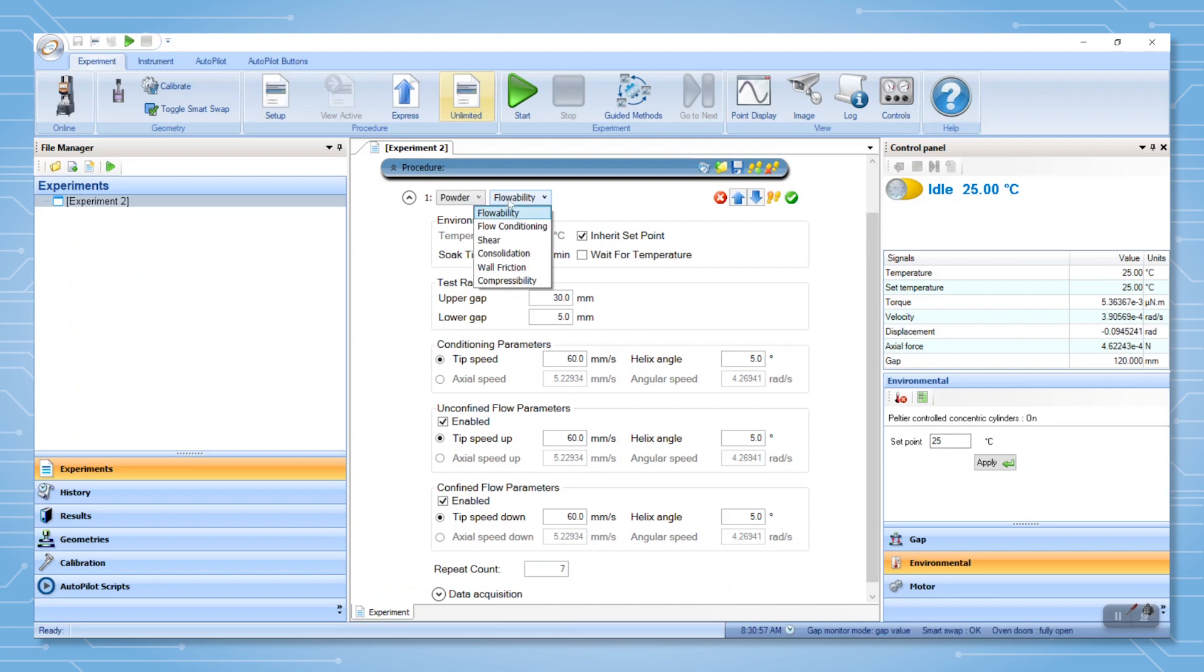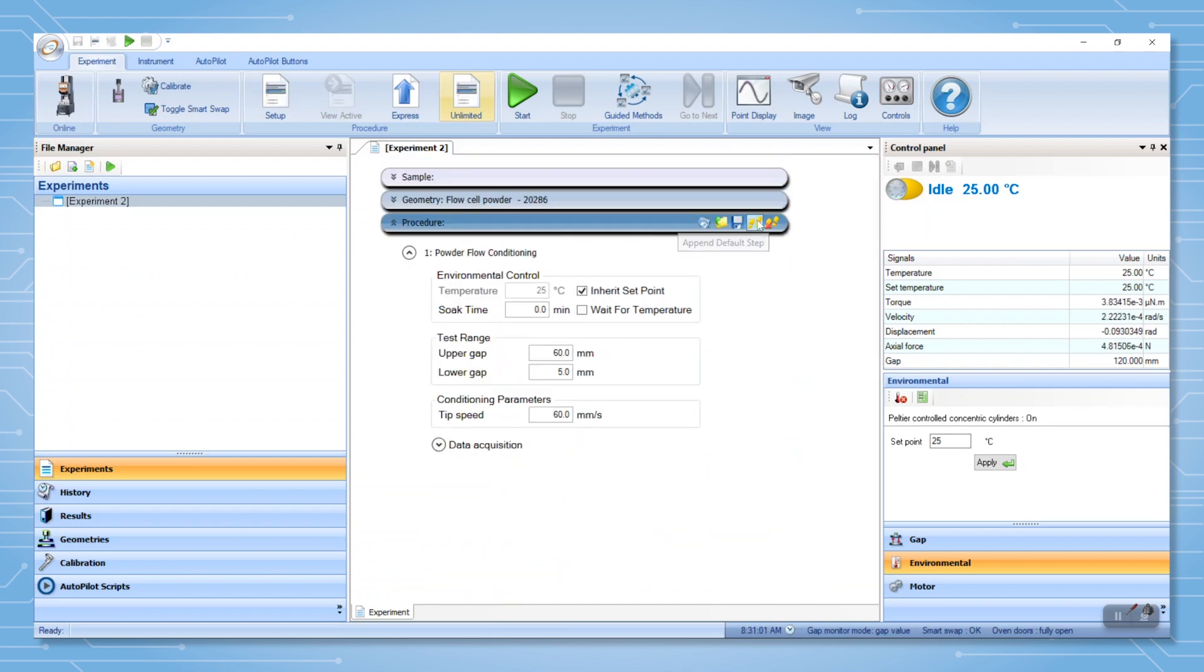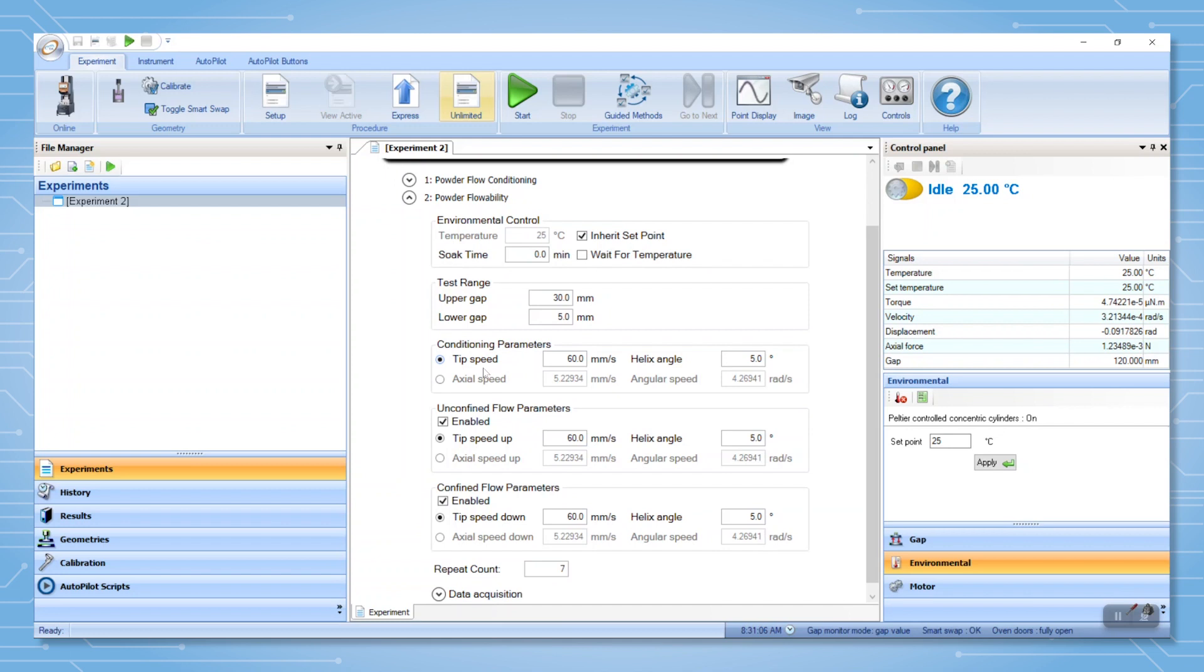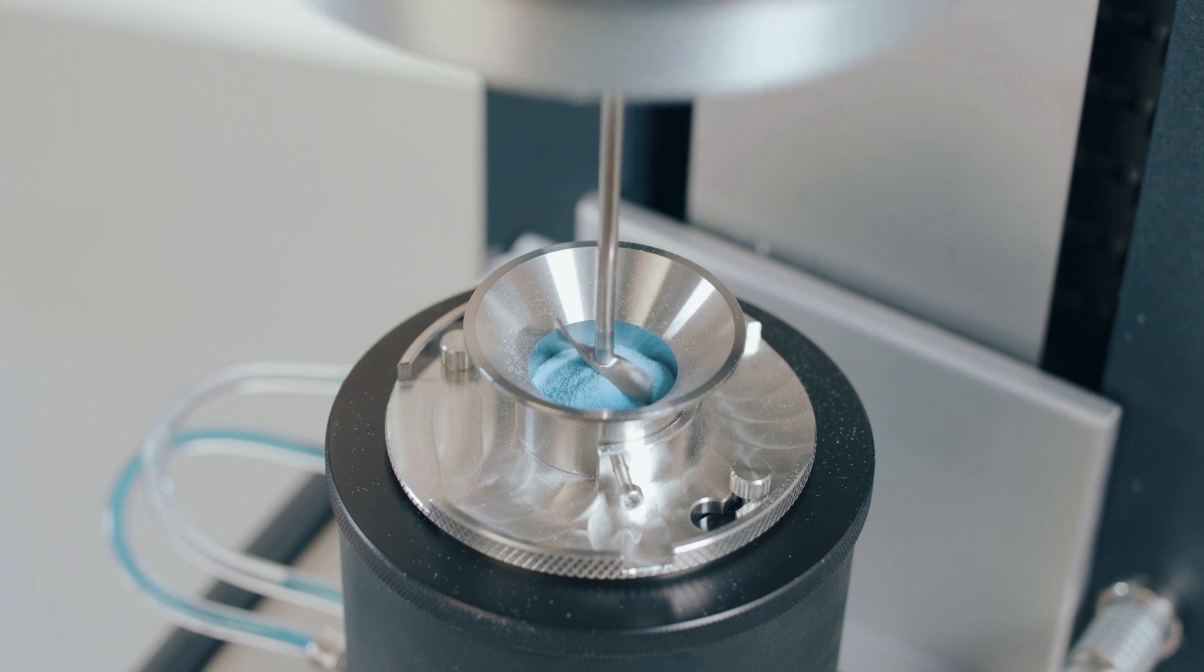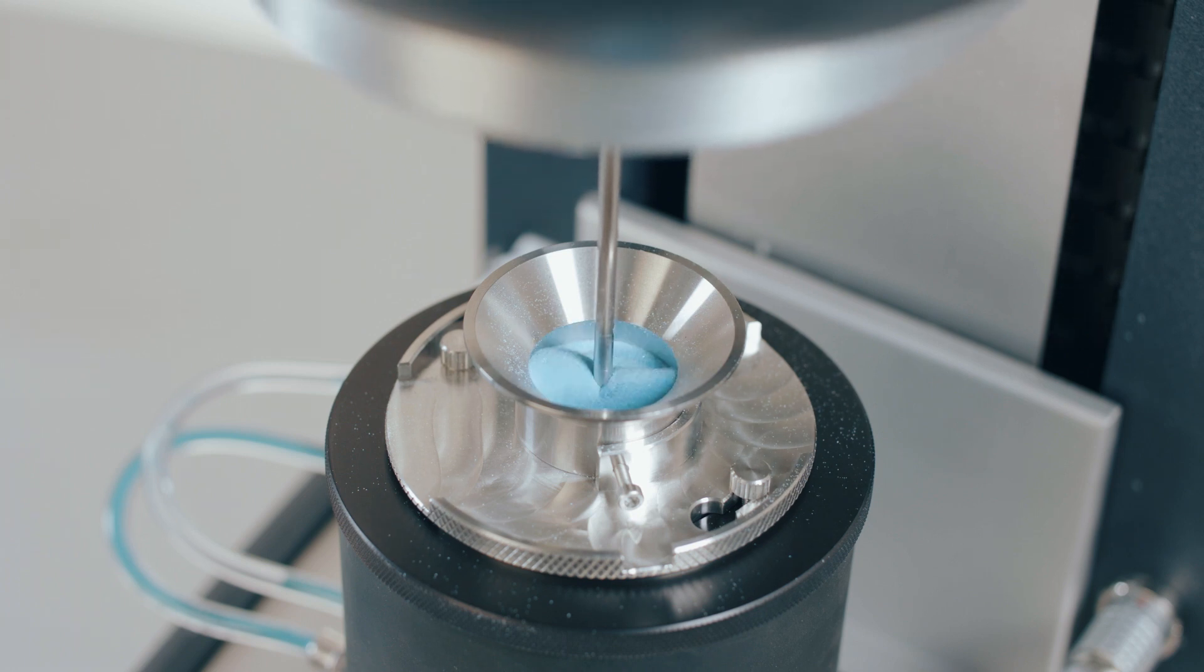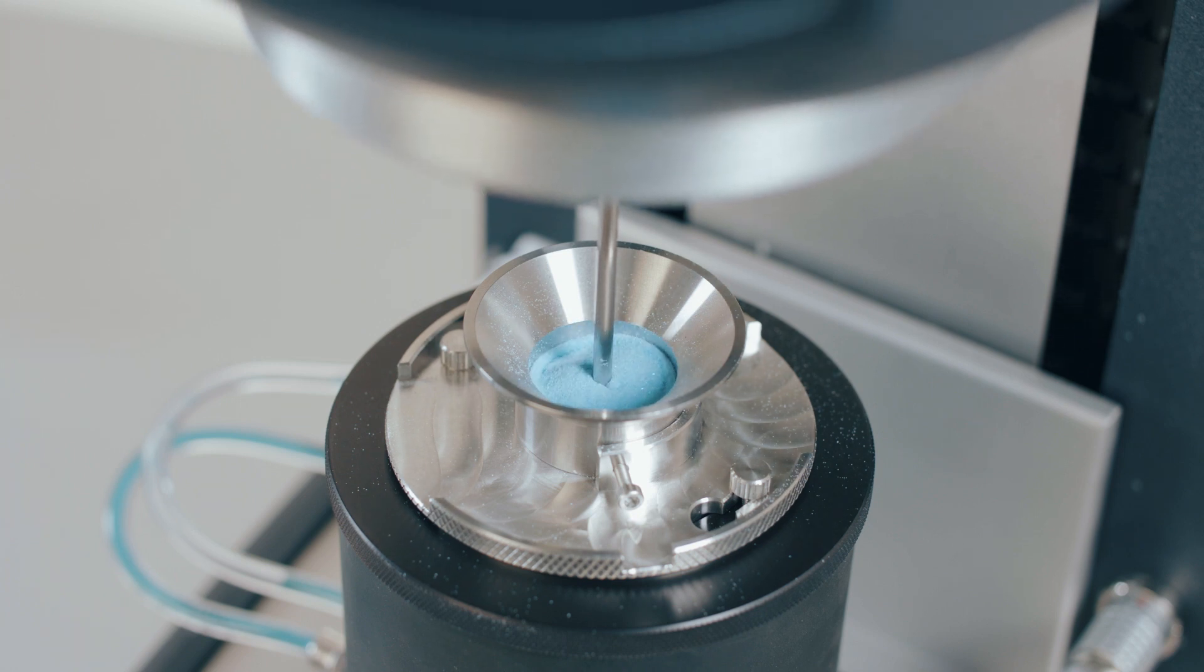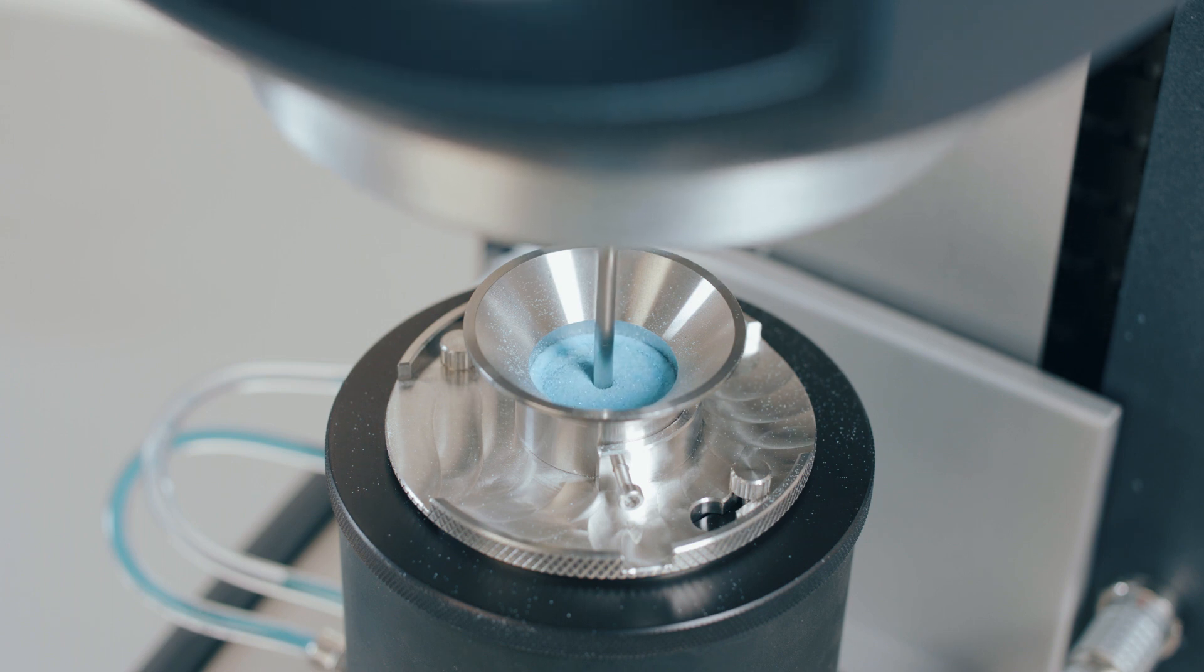The first step is powder flow conditioning and the second step is powder flow ability. The conditioning step is used to provide a well-defined, loosely packed initial condition. Conditioning is achieved by stirring the powder downwards and then upwards at a set tip speed.